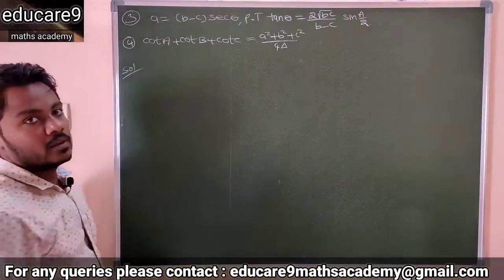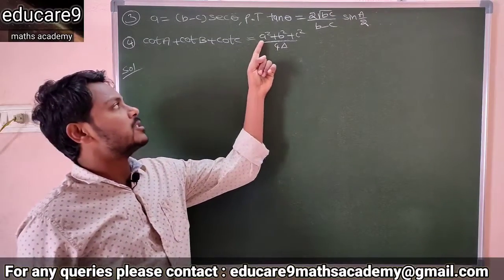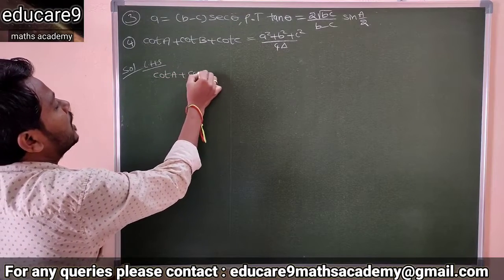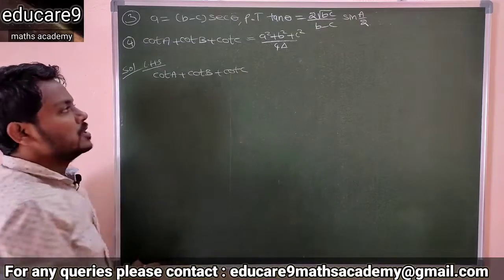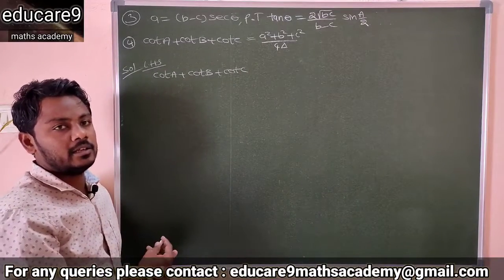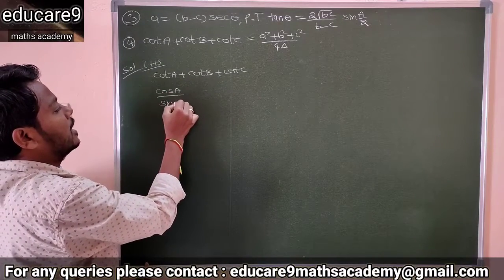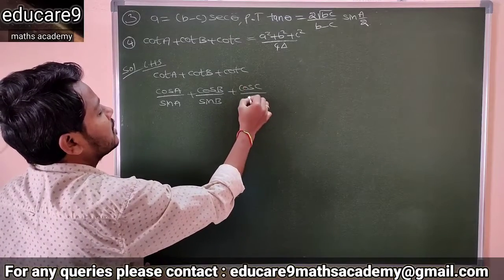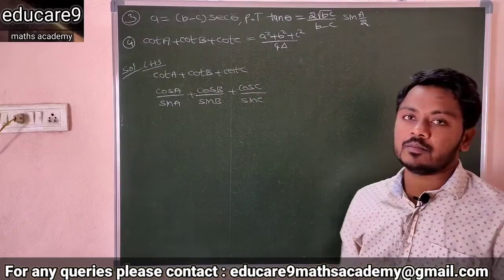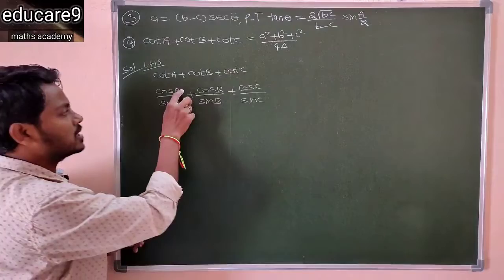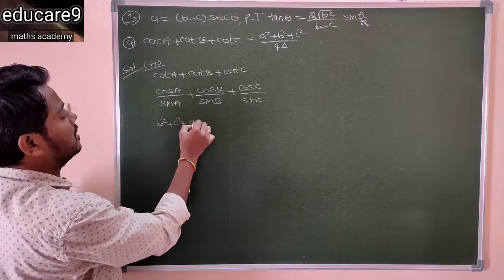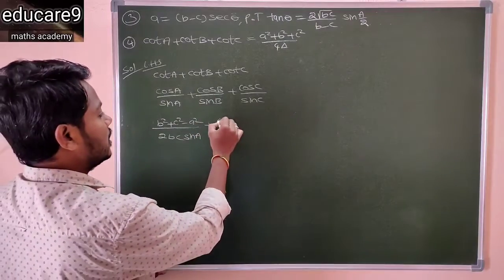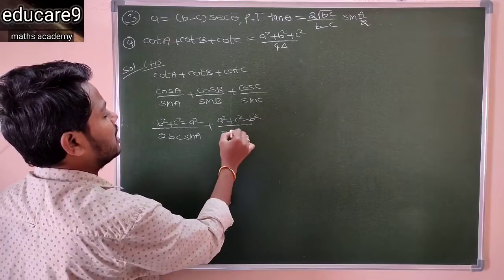See the fourth solution: prove cot A + cot B + cot C equals (a²+b²+c²)/4Δ. Consider the LHS. You know that cot θ can be written as cos θ/sin θ. So this is cos A/sin A + cos B/sin B + cos C/sin C. Now write the cos A, cos B, cos C formulas using the cosine rule.